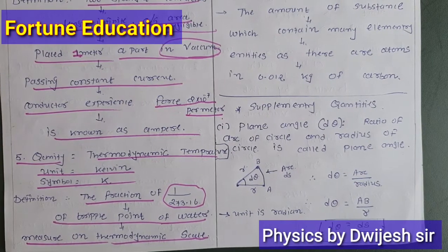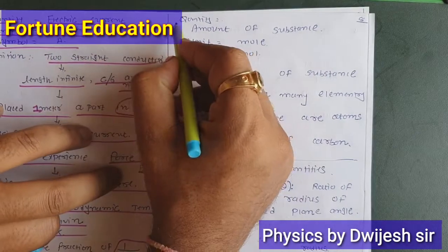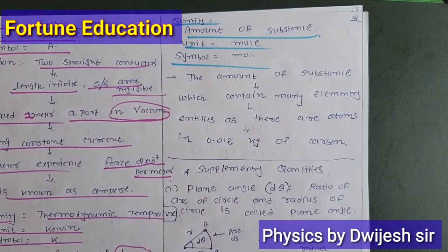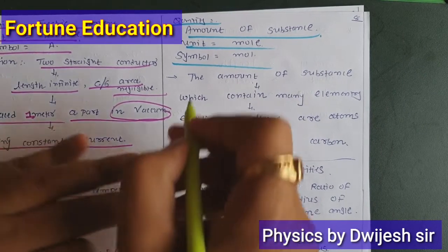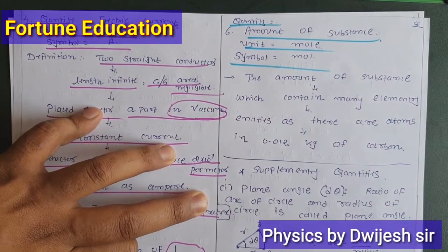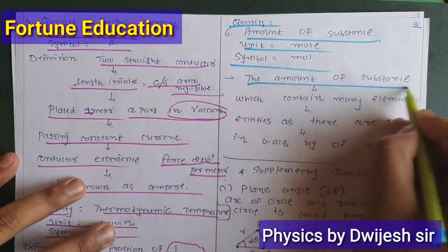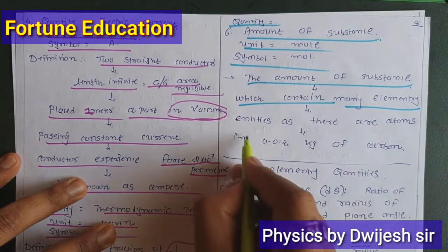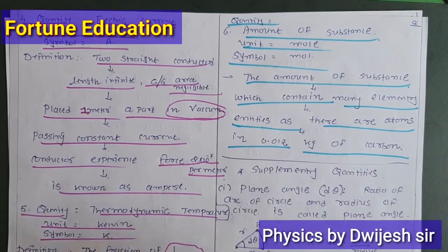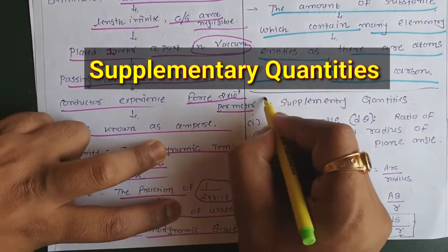The sixth base quantity is amount of substance. The unit is mole and the symbol is 'mol'. Each and every particle is made of different kinds of molecules and small entities. The amount of substance which contains as many elementary entities as there are atoms in 0.012 kg of carbon is defined as one mole.